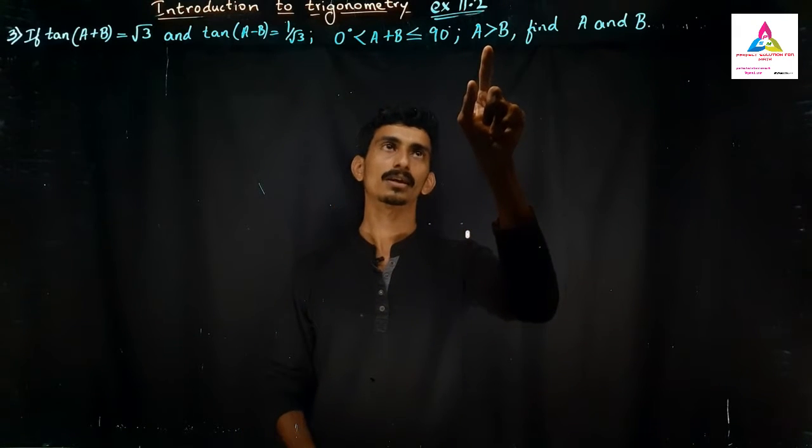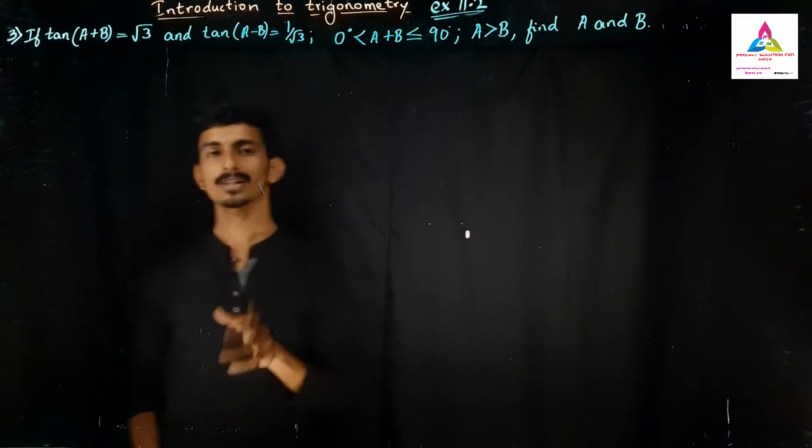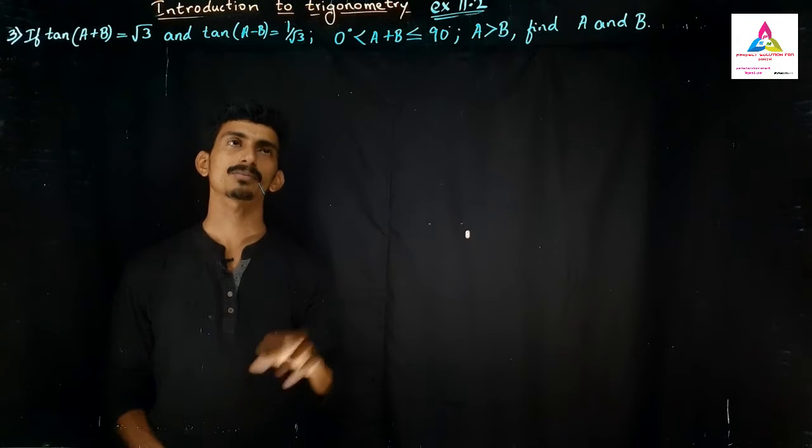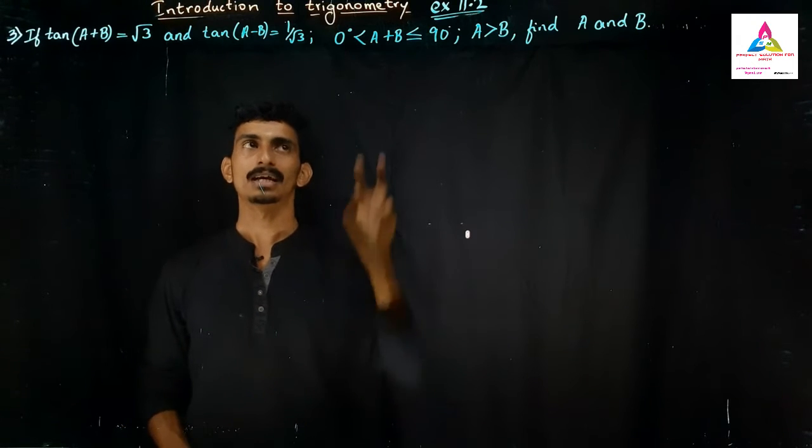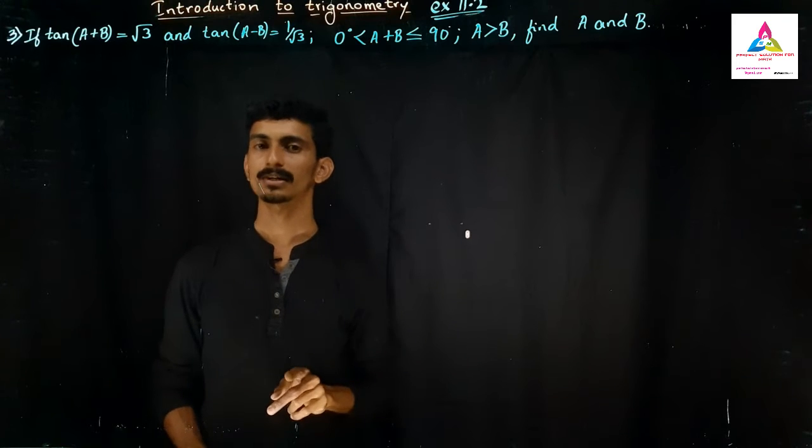So A greater than B, find the A and B value. So it is like a linear equation. Why? Because here we have two variables A and B. So we have to find A and B. So it looks like a linear equation.